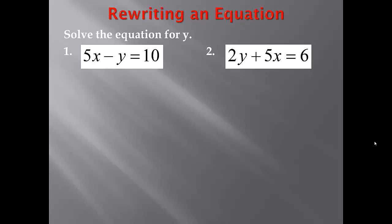For number one, we have 5x minus y equals 10. We want to solve it so it says y equals. The first thing we need to do is take this 5x and move it to the right-hand side. In order to do that, we need to subtract 5x, because 5x minus 5x is 0 — that's how we get rid of it. We're going to subtract it from both sides. So now 5x minus 5x is 0, and we still have minus y, which is the same thing as negative y, and that would be equal to 10 minus 5x.